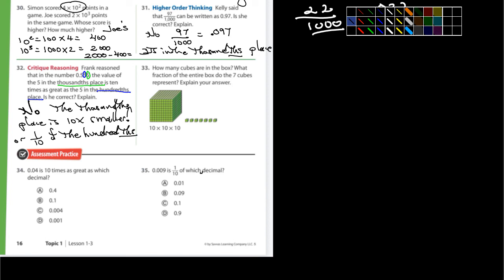Wow, I'm kind of doing all these for you guys. What a scam. I should make you do some. How many cubes are in the box? What fraction of the entire box do the 7 cubes represent? All right. So how many cubes are in the box? Well, the 10 times 10 times 10 should tell you. So that's going to be, that's 1,000. There's 1,000 cubes.